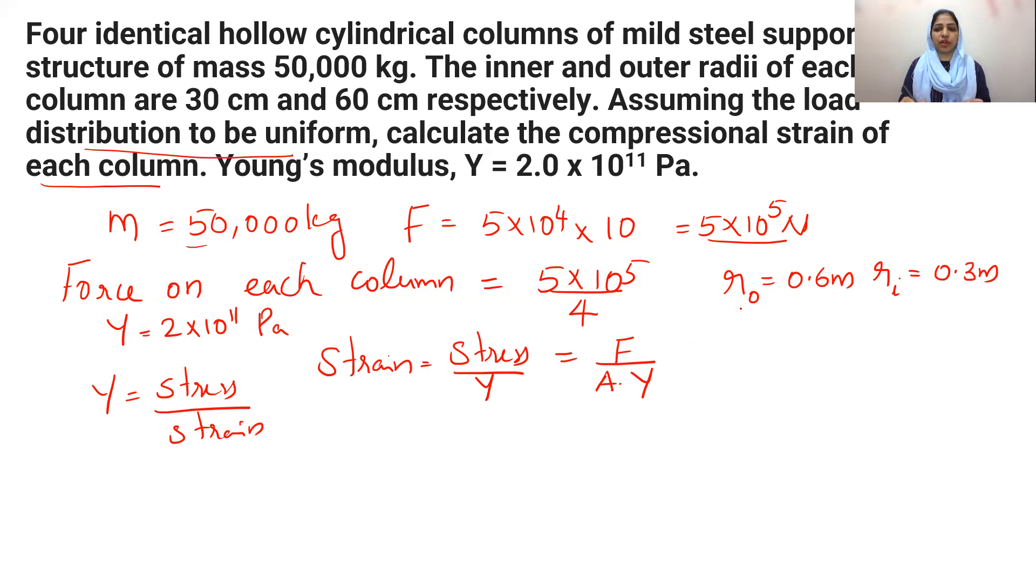So, area of cross-section will be equal to π into R₀ squared minus Rᵢ squared. Okay? This is area of cross-section which is equal to π into R₀ 0.6 squared 0.36 minus Rᵢ is 0.3 squared 0.09 right? So, area of cross-section will be equal to 0.27 into π.